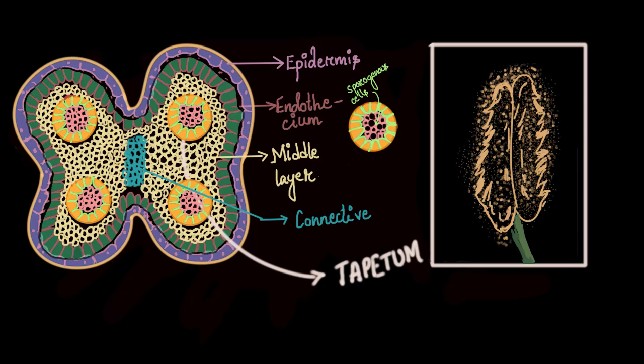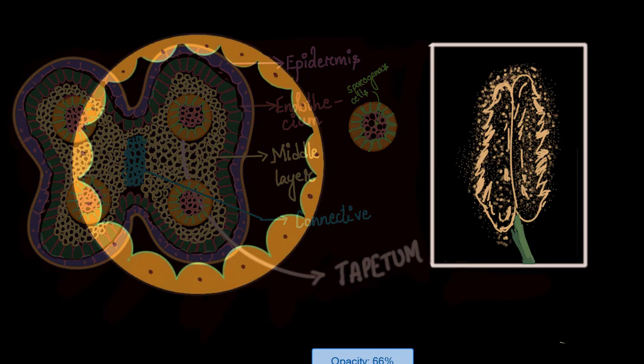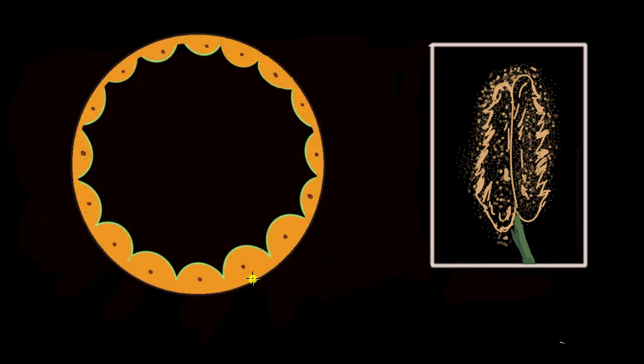Let's begin by talking about the changes that take place in the microspores. For that we will have to look into this part—the tapetum layer and the pink cells that you see inside which later form microspores. Let us enlarge that part now. This is the tapetum layer.